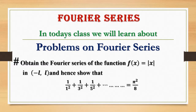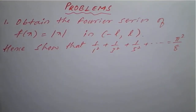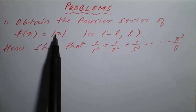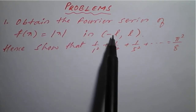In today's class, we will learn about problems on Fourier series. The problem is: find the Fourier series of the function f(x) = |x| in the interval [-l, +l], and hence show that 1/1² + 1/3² + 1/5² + ... = π²/8.